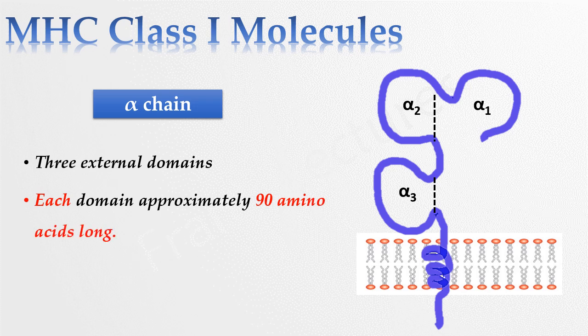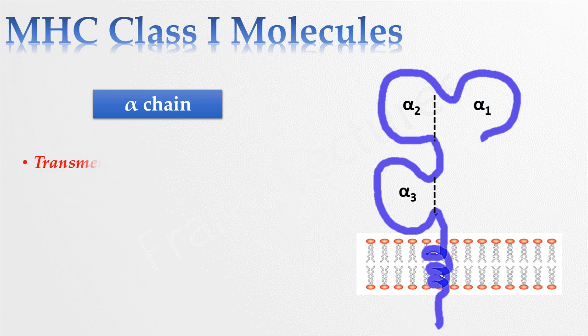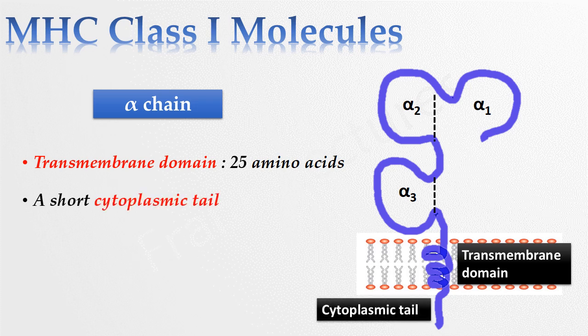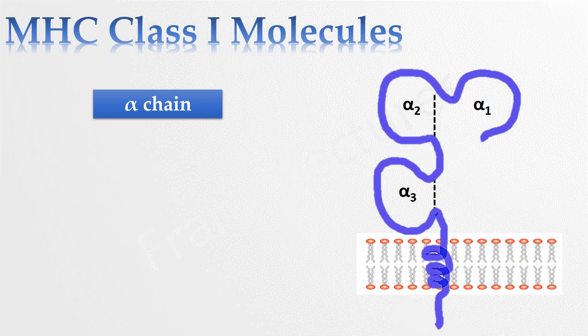Alpha chain is inserted into the cell membrane by a transmembrane domain of about 25 hydrophobic amino acids, followed by a short stretch of hydrophilic amino acids which forms the cytoplasmic tail. As you can see here the alpha 3 domain is attached to the plasma membrane by transmembrane domain.